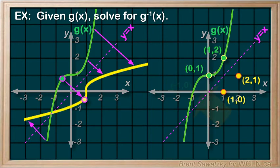And another point, negative 1, 0, switches to get 0, negative 1. And we can plot that here.